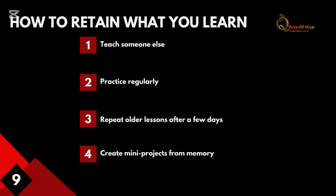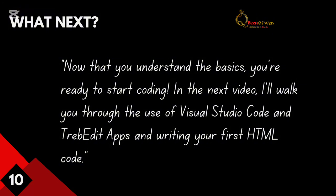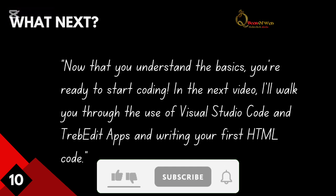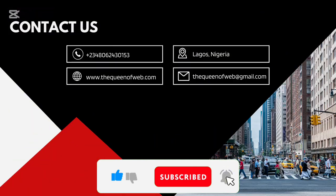Create mini projects from memory. Look at a website or app and try to recreate what you see — try to build it yourself. That practice will help you a lot. Now that you understand the basics, you are ready to start coding. In the next video, I'll walk you through Trebedit and Visual Studio Code — how to install them — and then writing your first HTML code. It's going to be exciting!